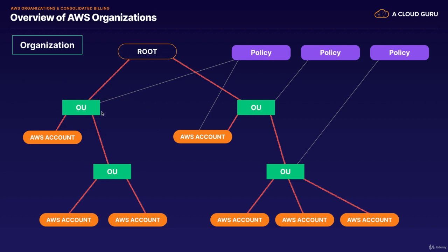Within our organization, we have OUs or Organizational Units. So this might be our finance department, this might be our developers, this might be our production account, and this could be our test and dev developers — test, dev, UAT, etc. And the way you apply permissions is by using policies. Just like what we do in IAM, we apply a policy document, and then that policy will be inherited.